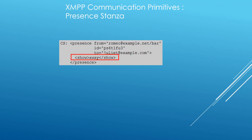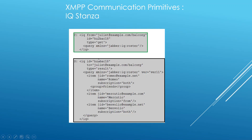You see a presence stanza here, and it has a name, some attributes, and some child elements. The IQ stanza is also the same structure. You send it to the server — in this case we're trying to get some kind of information from the server, and the server responds to us using an IQ stanza that it sends back.